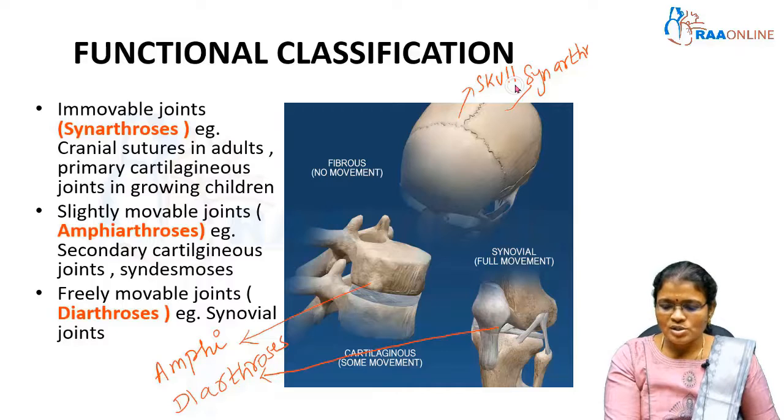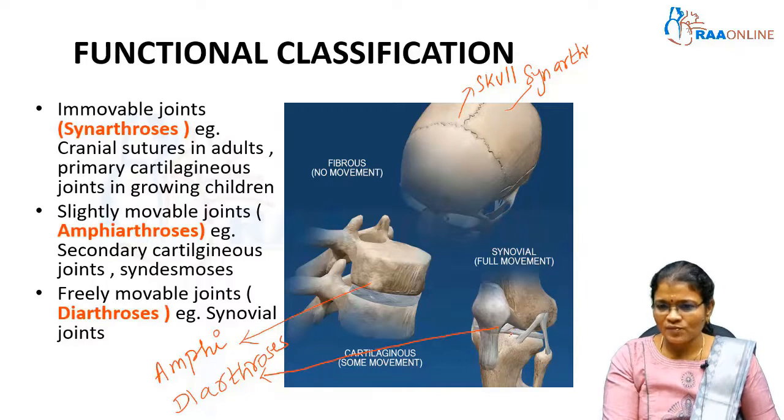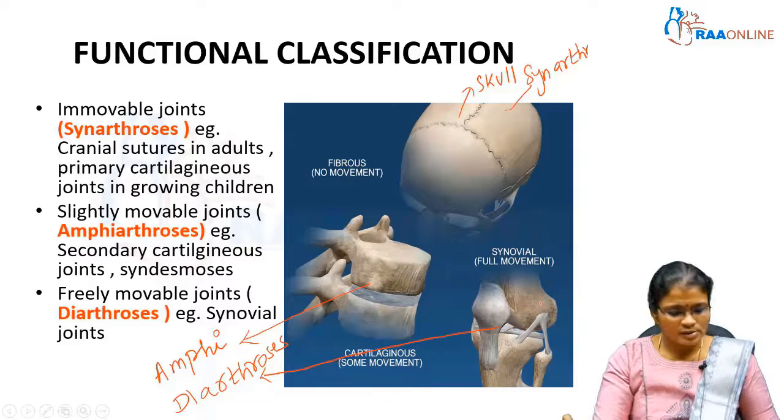The third functional type is amphiarthrosis, which represents joints with slight movement, found in most cartilaginous joints.